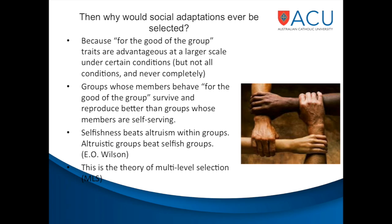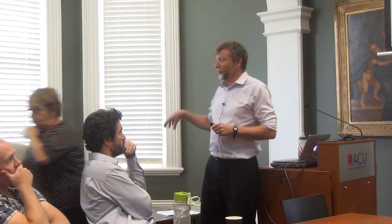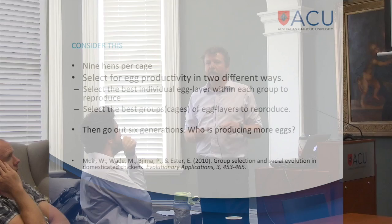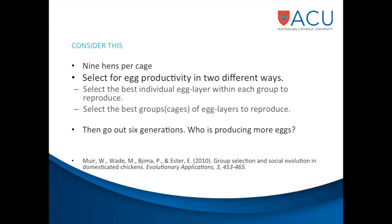Here's a nice illustrative example from a study done in the agricultural sector about chickens in cages. Imagine you've got nine hens per cage and you're selecting these chickens on one of two criteria: either you're selecting the very best individual egg layers — what Steve Hayes calls the 'badass chickens' — the ones that are the most productive individually; or you're selecting by cages, choosing the cages that work most effectively together. Then you go out six generations — who's producing the most eggs? In the first condition, we're choosing the best genetically adapted chickens, the ones producing the most eggs — maybe think of these as the ones producing the most scientific papers, if you want an analogy.